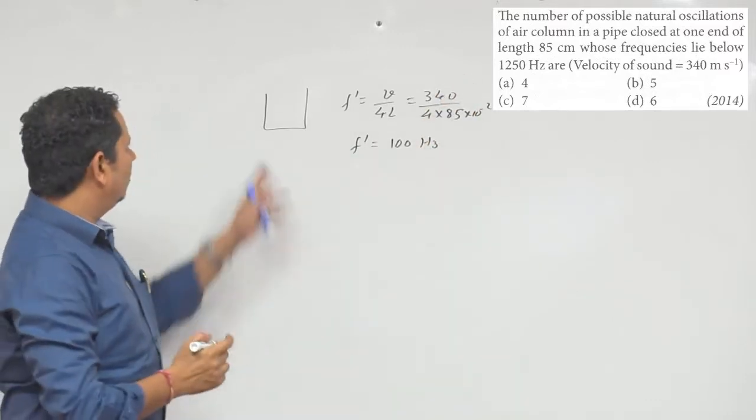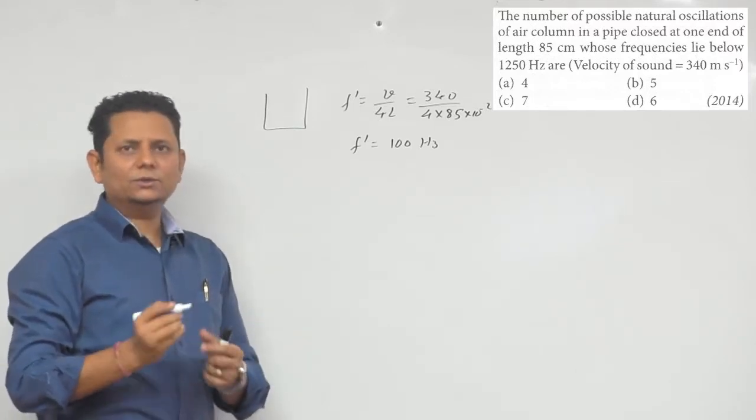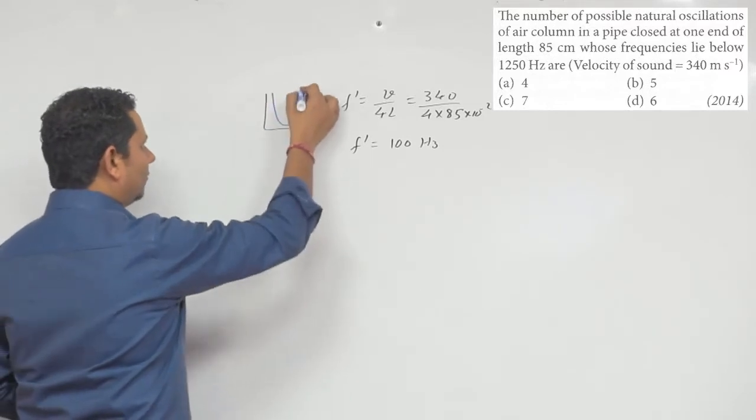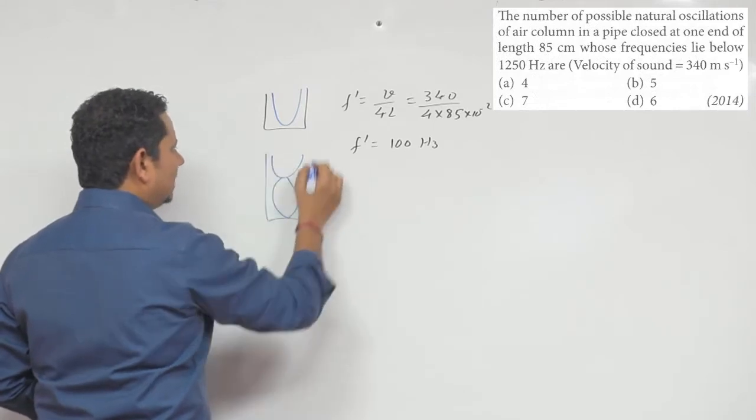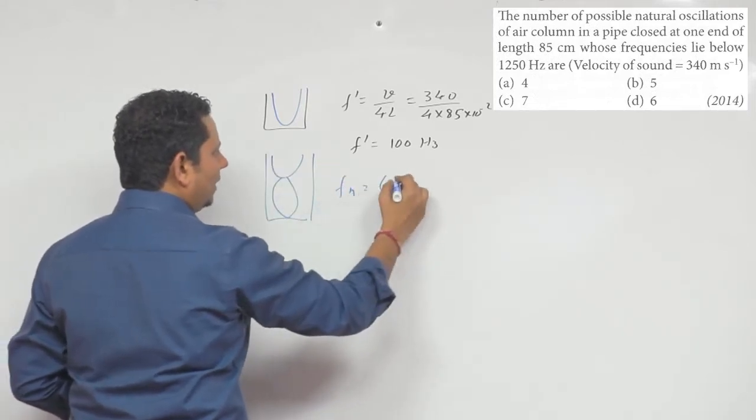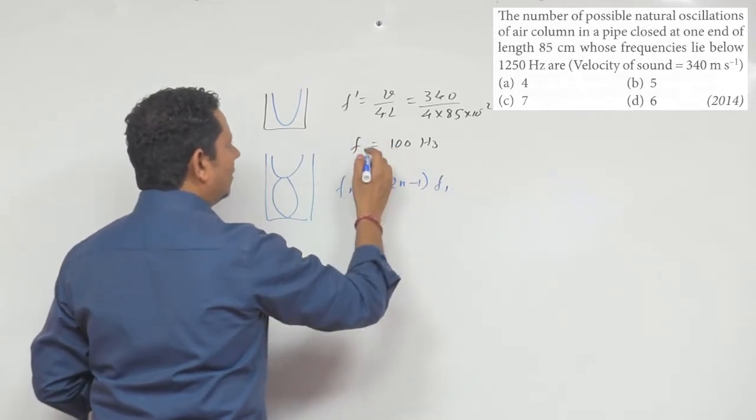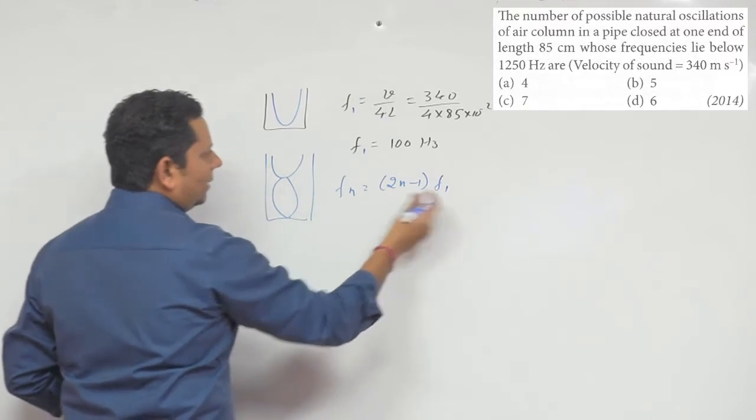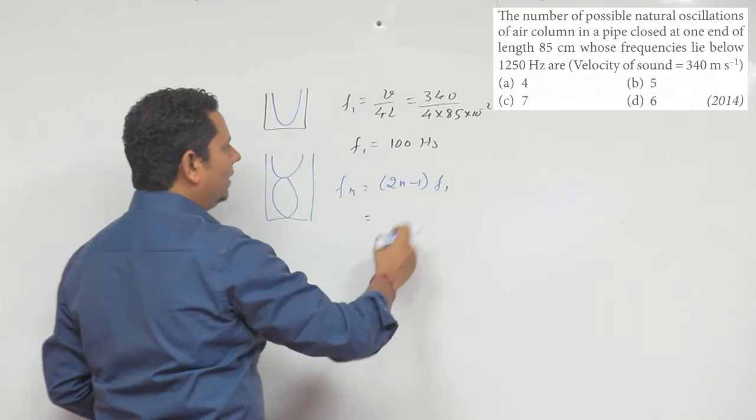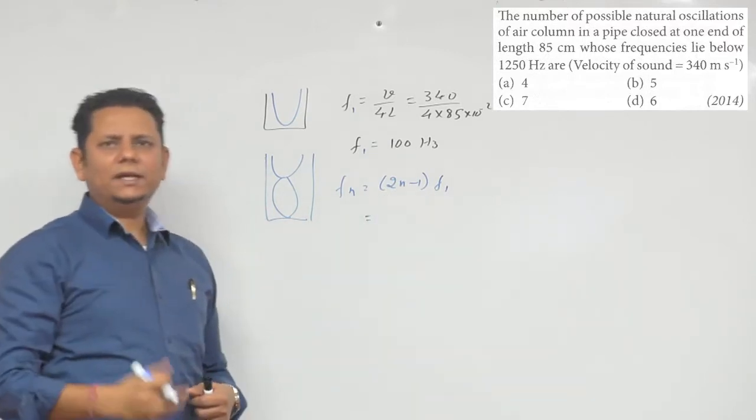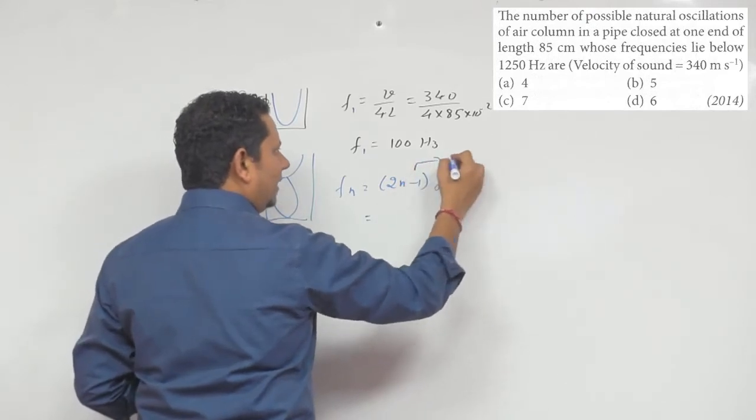Now, when we open at one end, closed at other end, this is your closed organ pipe, and the other frequency will be 2N-1 multiplied by the fundamental frequency. So this means that if we keep the values, the value will be 100 Hz, then the value will be 2N-1 multiplied by the multiple.